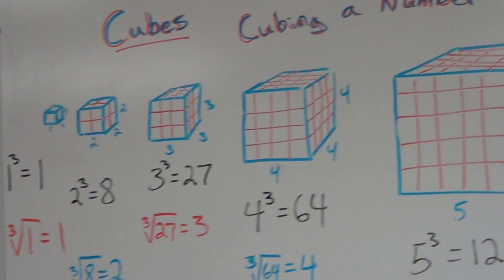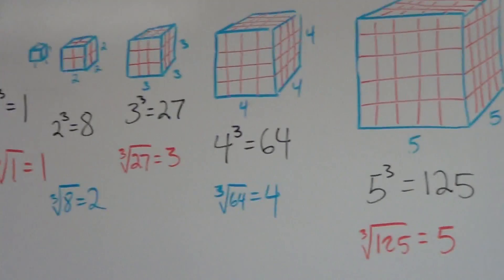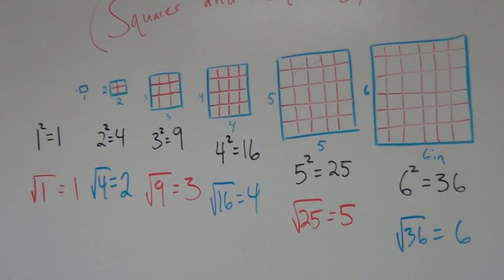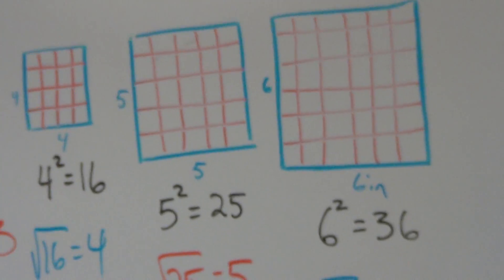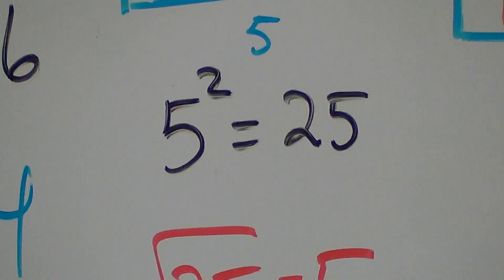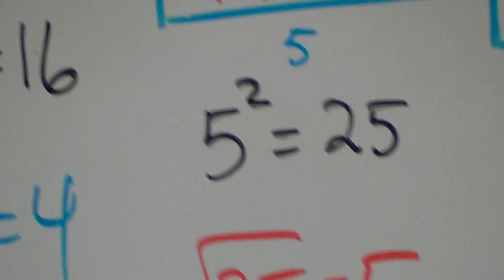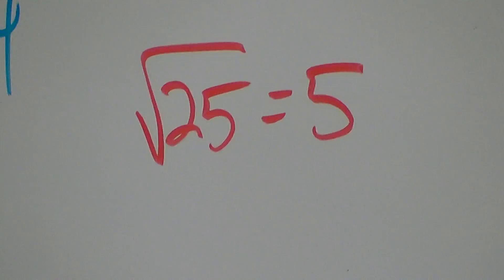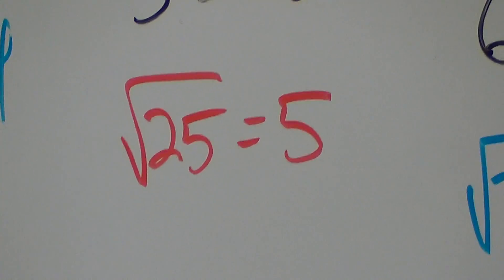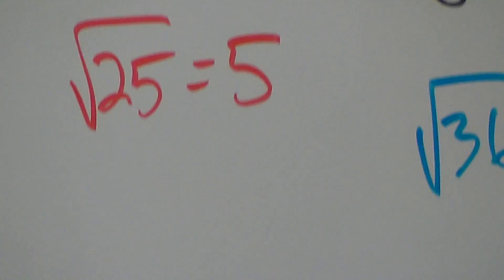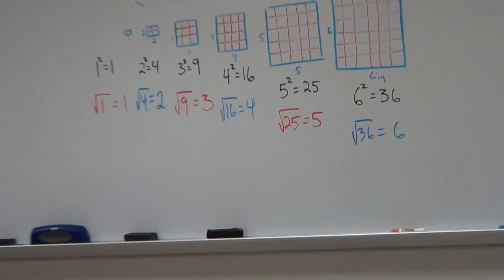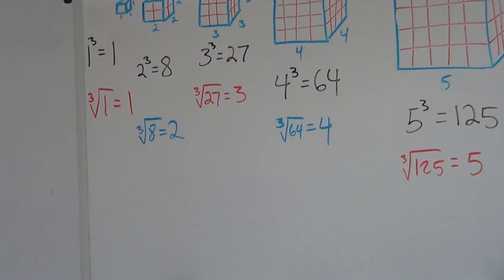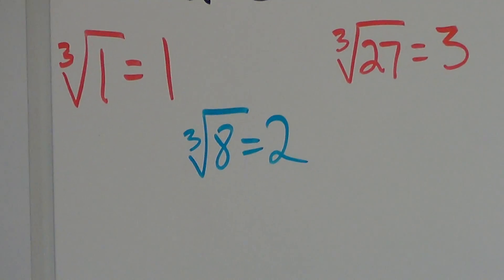The cubed root of a number is similar to the square root of a number. To remind you: with perfect squares, you take a number like 5, do 5 times 5, and get 25. The square root is the inverse — you take the square root of 25 and get 5. So cubed roots are the same thing except it's asking what number times what number times what number equals the number in the box.